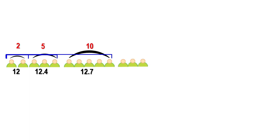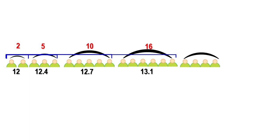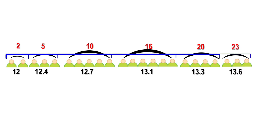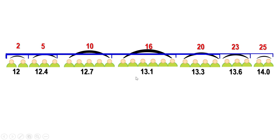Adding six kids in the next group, we get 16 kids and the level reaches 13.1. Adding four kids in the next group, we get 20 kids and the level reaches 13.3. Adding three kids, we get 23 kids at level 13.6. Adding two more kids, we get 25 kids at level 14. The median is the level of the 13th kid. Up to 10 kids the level is 12.7, and up to 16 kids the level is 13.1, so from the 11th to the 16th kid the level is 13.1, meaning the 13th kid is at 13.1.